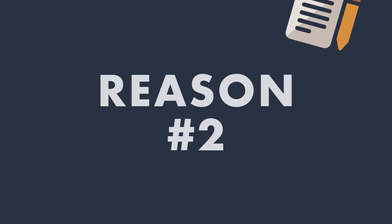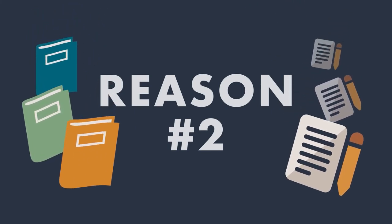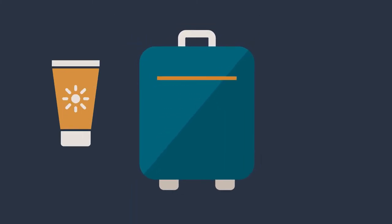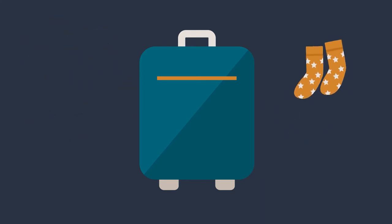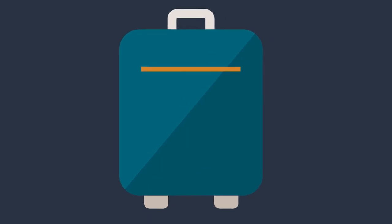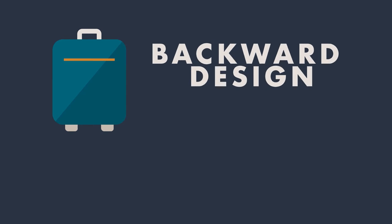And reason number two: when you start with content, you're looking at the things of the course, not the destination. It's like preparing to go on vacation by first packing your suitcase — I've got sunscreen, a book to read, a sweater in case it's cold, and some extra socks. I don't know where I'm going yet, but my suitcase is packed. That's what makes backward design backward. You don't start with the suitcase, you start with the destination.